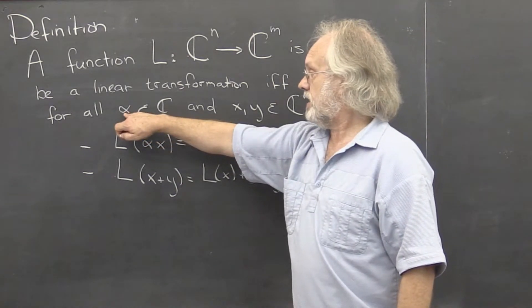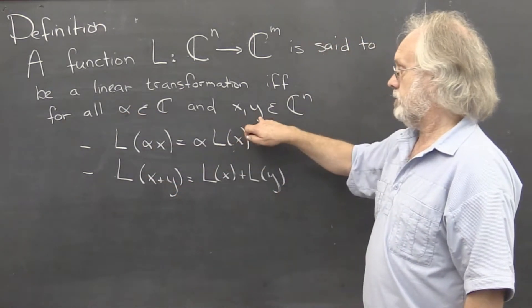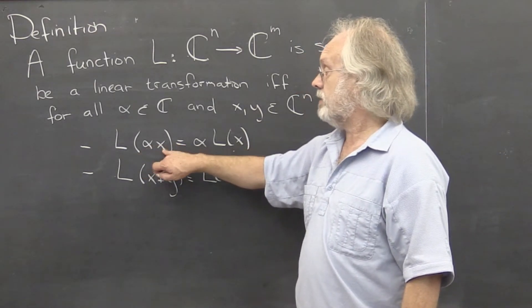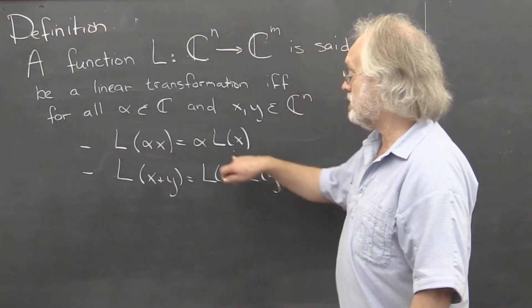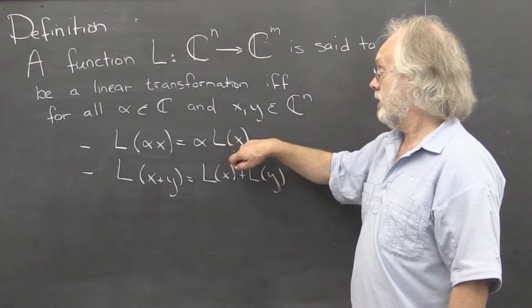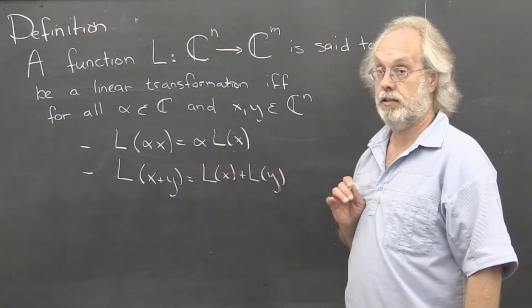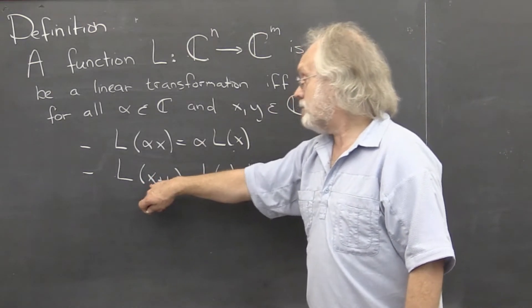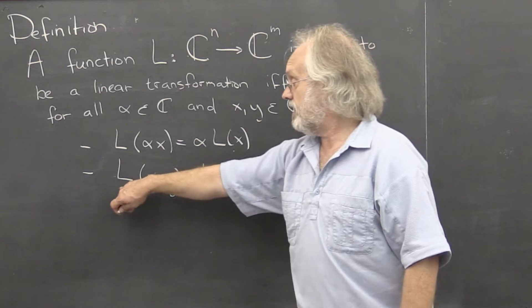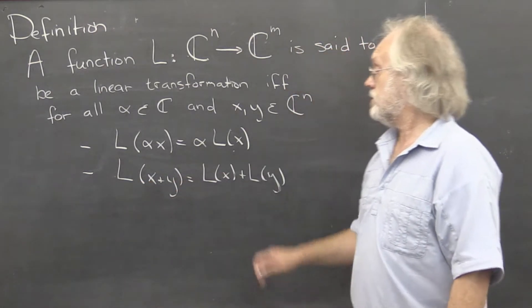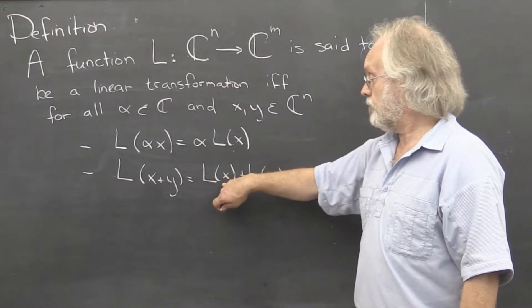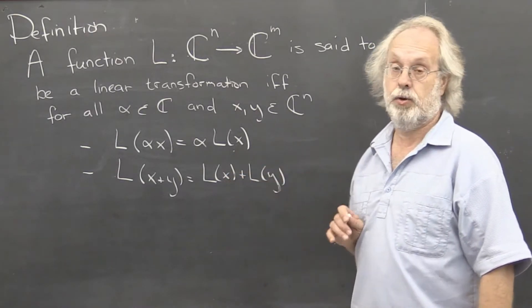If you're given a scalar and two vectors, if you first scale a vector and then transform it, you must get the same answer as if you first transform the vector and then scale it. And if you add the two vectors together first and then transform the result, you must get the same answer you get if you first transform the vectors and then add them.